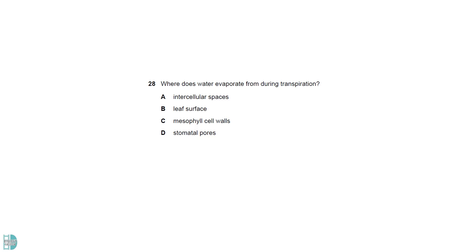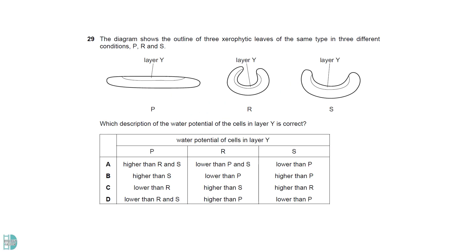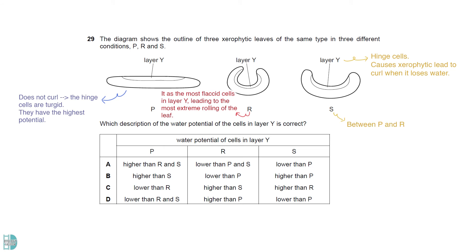Water evaporates from the cell walls of mesophyll cells leading to the transpiration pull. Layer Y is the hinge cell which causes xerophytic leaves to curve when losing water. P does not curve indicating that the hinge cells are turgid. This means they have the highest water potential. R has the most flaccid cells in layer Y leading to the most extreme rolling of the leaf. So it has the lowest water potential. Q is somewhere in between.